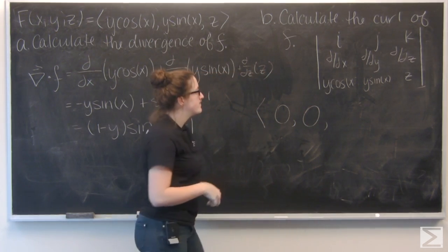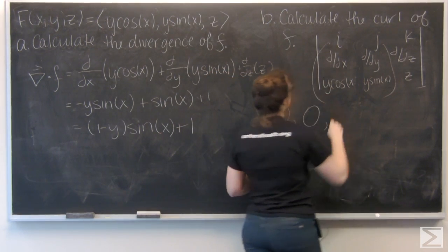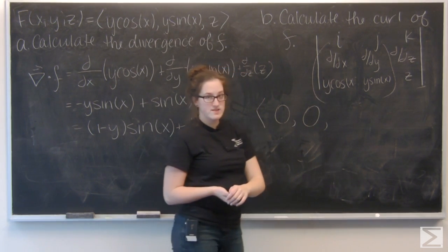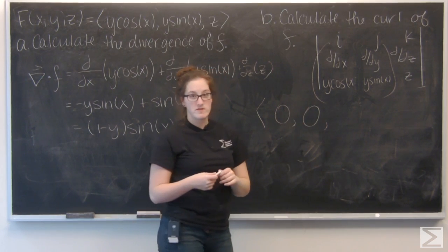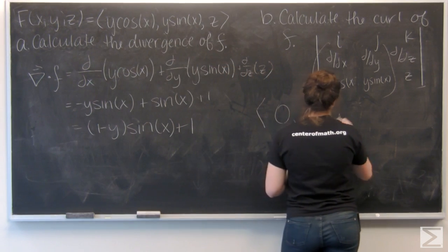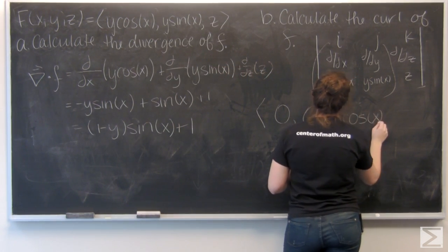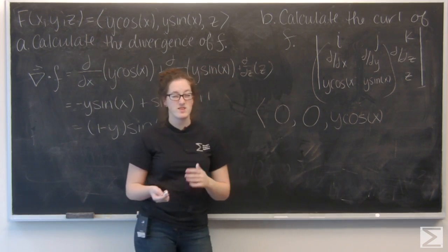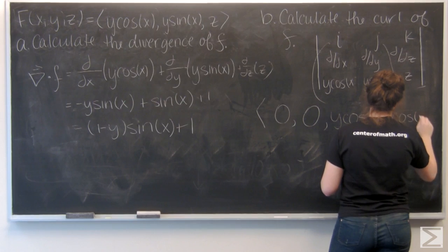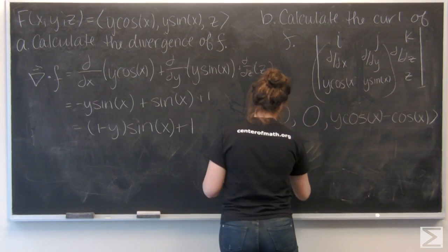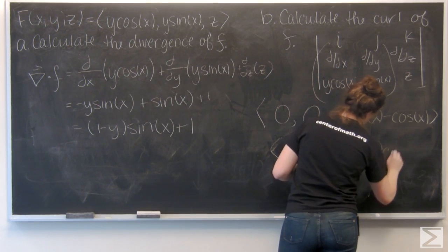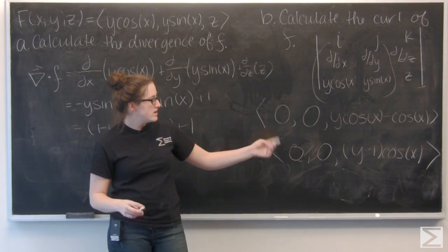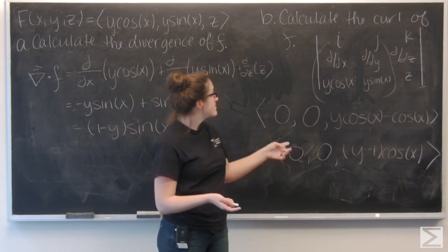For the k component, I cut the third column and take the determinant of that 2 by 2 matrix. I have the derivative of y sine x with respect to x — y is a constant and the derivative of sine x is cosine x, so I get y cosine x — minus the derivative of y cosine x with respect to y, which is just cosine x. So I can rewrite the curl of f as (0, 0, (y minus 1) cosine x).